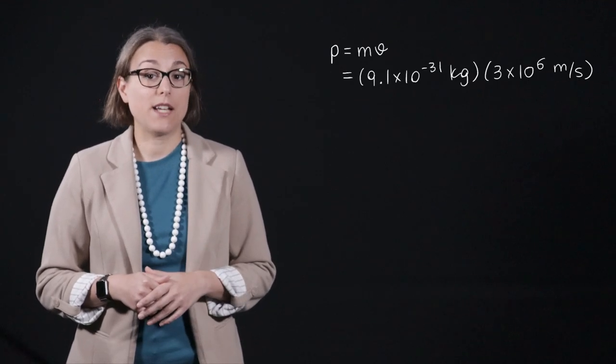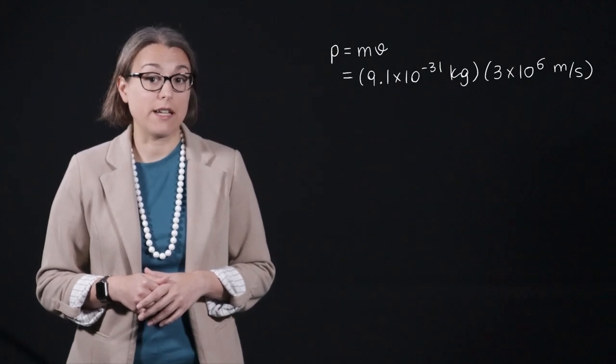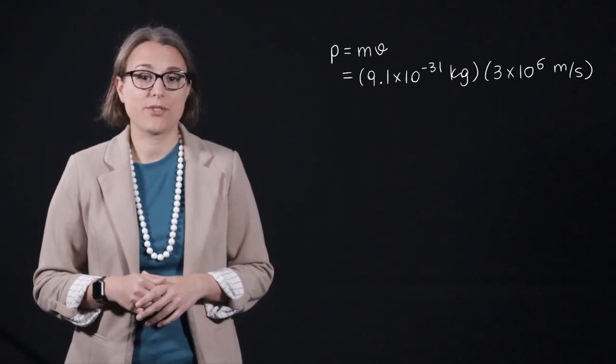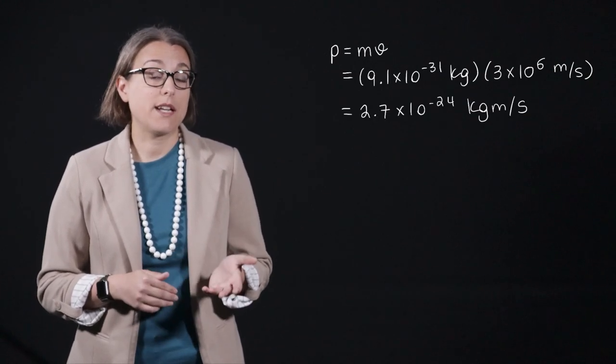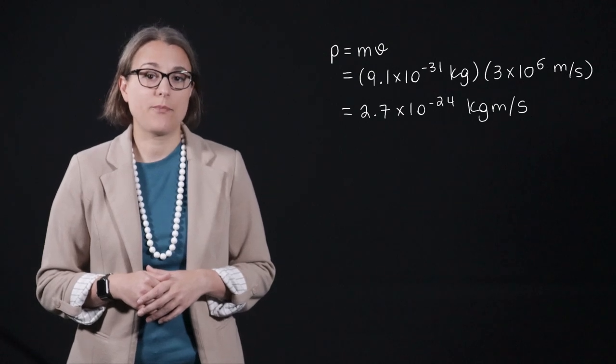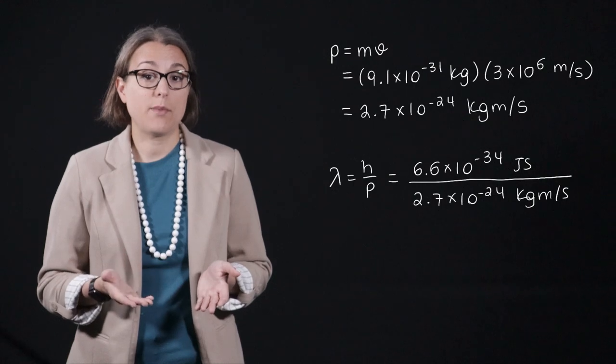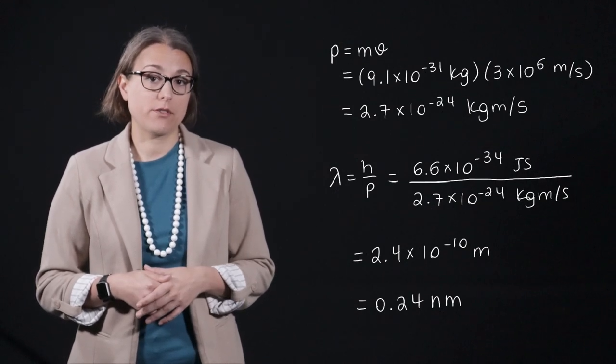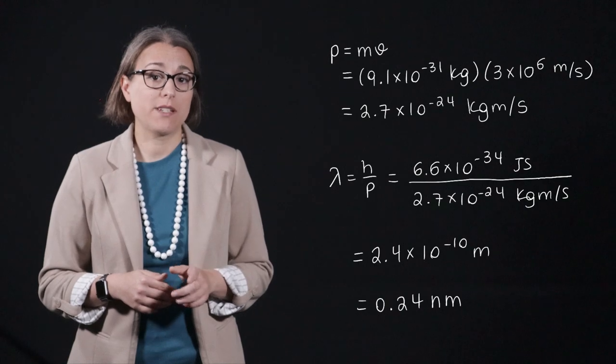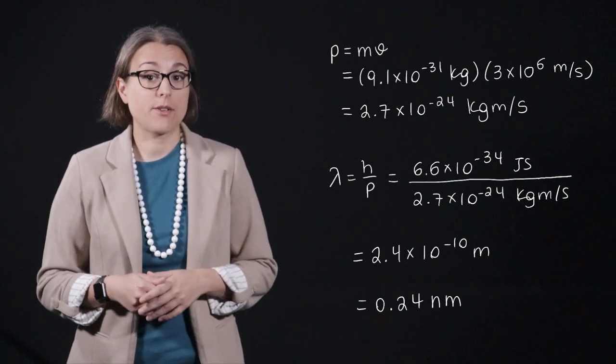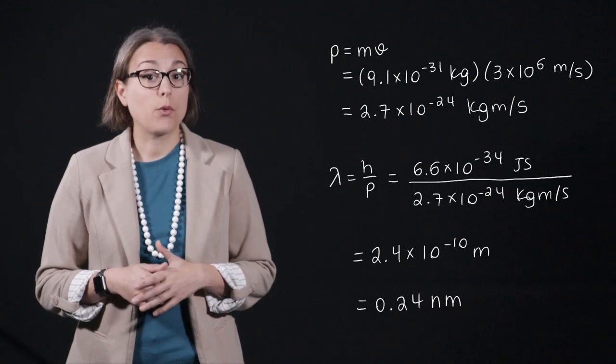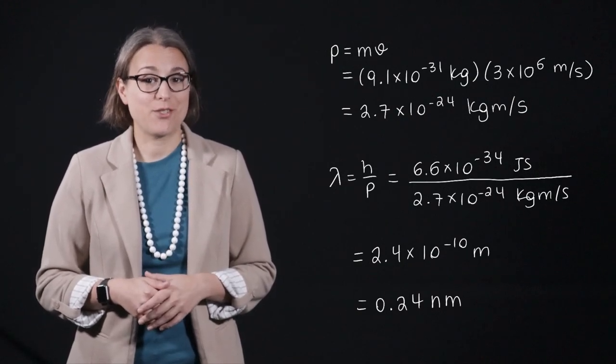Now, let's consider an electron, a decidedly subatomic object. An electron has a mass of 9.1 times 10 to the negative 31 kilograms. And let's assume that it travels at 1 percent of the speed of light, a very fast 3 times 10 to the 6 meters per second. The momentum of the electron is 2.7 times 10 to the negative 24 kilogram meters per second. The wavelength of the electron is Planck's constant divided by the momentum, which is 2.4 times 10 to the negative 10 meters, or 0.24 nanometers. While this is definitely a small number, it is equivalent in length scale to the wavelength of x-rays. And considering that the radius of an entire atom is much, much smaller than 0.24 nanometers, the wavelength of an electron is definitely noticeable on this length scale.